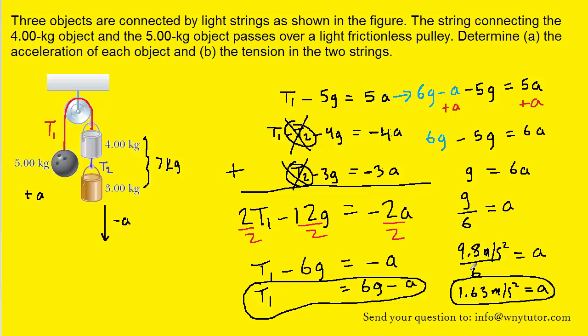Now once we have the acceleration the rest of the problem is relatively straightforward. All we have to do to find t1 is to plug in the acceleration where we see a in this equation right here. So there we've done it, we can plug in 9.8 for g and then when we solve for t1 we end up with approximately 57.2 newtons. So that would be the correct answer for t1.